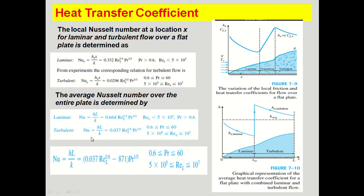For turbulent flow, mixing between fluid layers increases heat transfer, so the heat transfer coefficient is higher than in laminar flow. The Nusselt number for turbulent flow is: Nu = h̄L/k = 0.037 · Re_L^0.8 · Pr^(1/3), valid when Pr is between 0.6 and 60 and Re_L is between 5 × 10⁵ and 10⁷. This formula gives the Nusselt number or heat transfer coefficient for turbulent flow only.